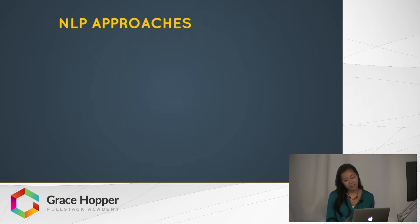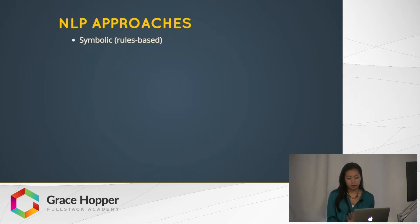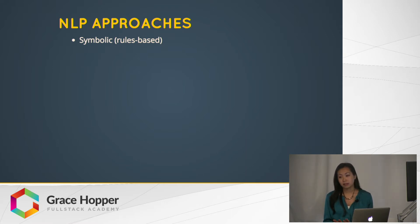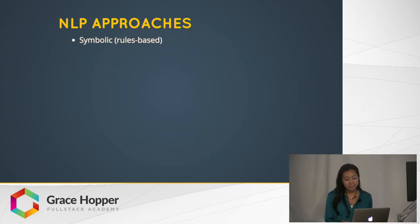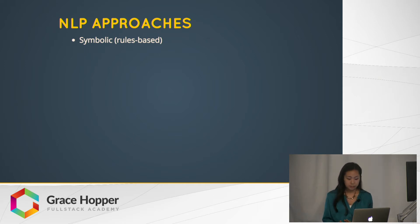So there are generally two approaches that programmers take in solving these problems. The first is a symbolic approach, which is rule-based and uses hard-programmed if-then logic to derive specific answers from specific input. During the early stages of NLP, this was the dominant approach. However, this approach is very rigid and it often breaks. As our understanding of linguistics improved and machine learning technology advanced, we were able to replace the rigid symbolic approaches with more complex statistical approaches that allow machines to learn and make evidence-based decisions.